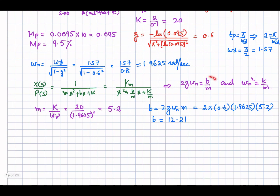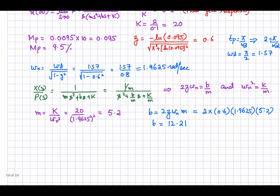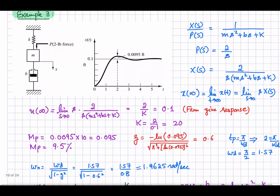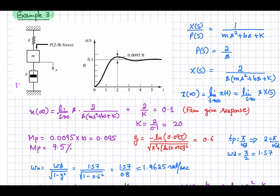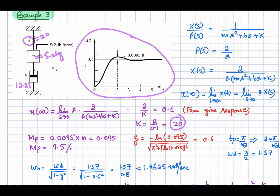From the second expression, b = 2ζωn·M. Plugging in the values, b = 12.21. We have evaluated all the system parameters: b = 12.21, mass M = 5.2 kg, and spring constant K = 20. From the step response given for this system, we have determined all the constants and parameters.